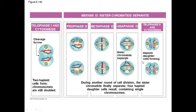So meiosis 1 takes the resulting cells from diploid to haploid, and then from meiosis 2, the haploid cells remain haploid. It's just separating the copies of each individual gene.